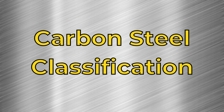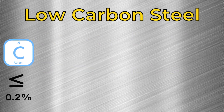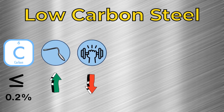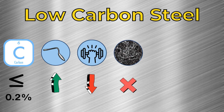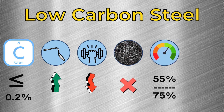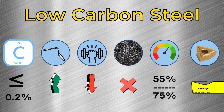Carbon steels are classified into three subgroups. First, we have low-carbon steel, with carbon content below 0.2%. This type of steel has high ductility, low strength, and low hardness. The chip control is poor, and it produces very long chips. The machinability rating is between 55 to 75%. If you're machining low-carbon steel, achieving chip control can be challenging due to its high ductility. Use a sharp cutting edge with a high rake angle to reduce the risk of build-up edge.